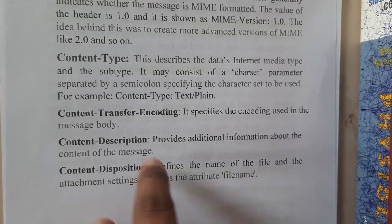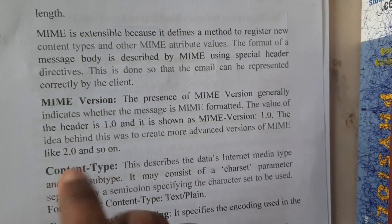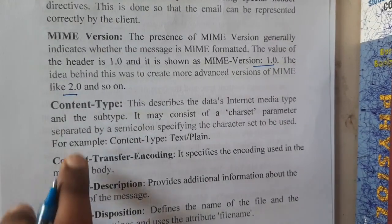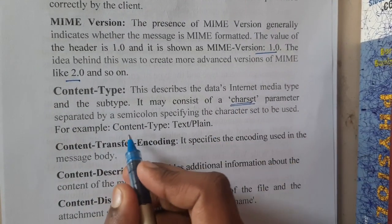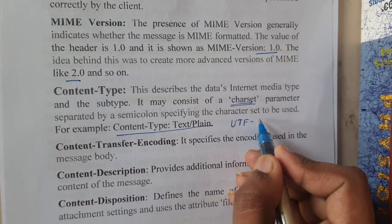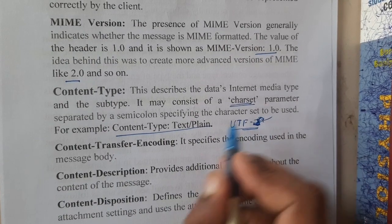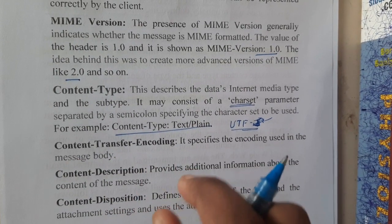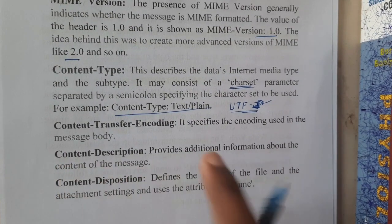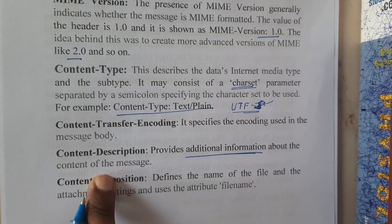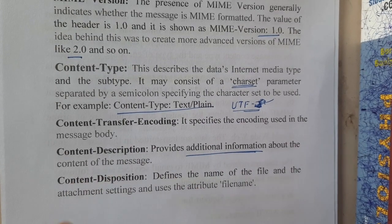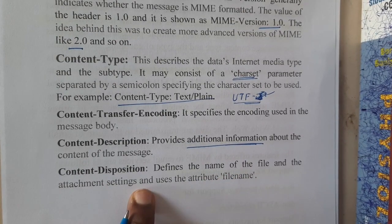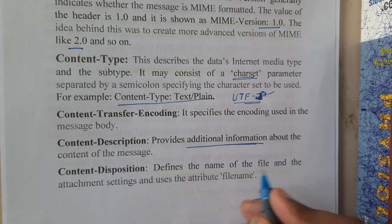The MIME version is 1.0, and now version 2.0 is the advanced version. Content type defines the character set — plain text or UTF-8, which is used in HTML and web pages. Content transfer encoding specifies the encoding mechanism used. Content description provides additional information about the message, like a subject. Content disposition defines the name of the file and attachment settings, using the attribute filename.